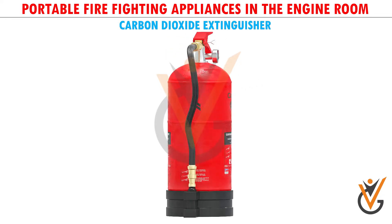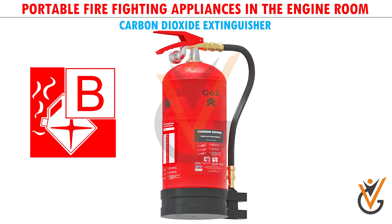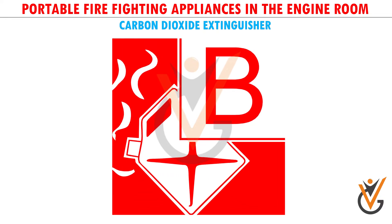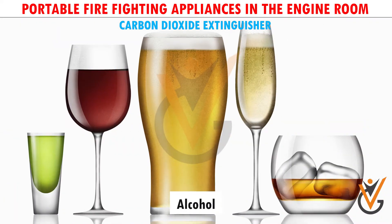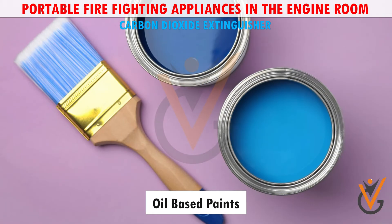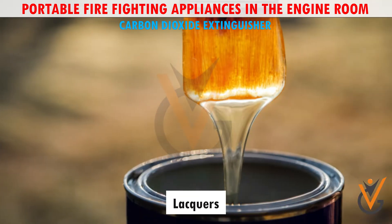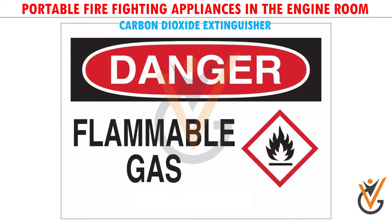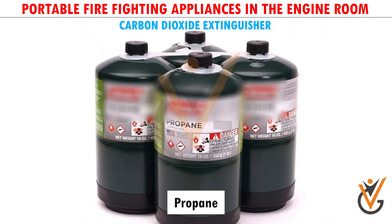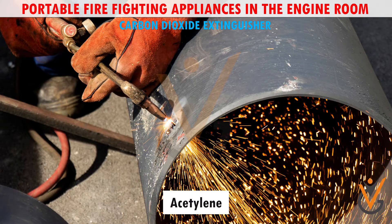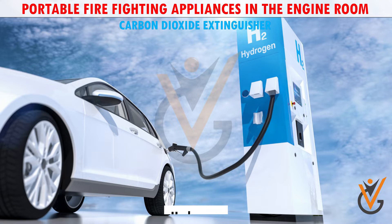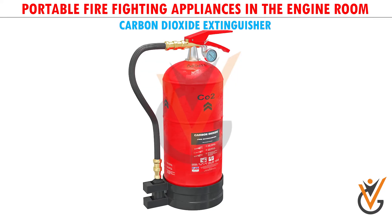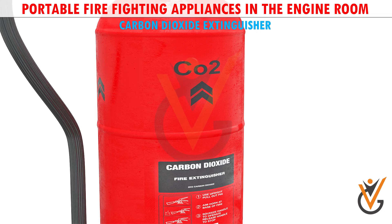Carbon dioxide extinguishers are mainly used for Class B or Class C fires. Class B fires involve flammable and combustible liquids such as gasoline, alcohol, oil-based paints, and lacquers. A Class C fire is the burning of flammable gases, which can be very dangerous and highly explosive. Flammable gases include propane, acetylene, hydrogen, methane, and isobutane.